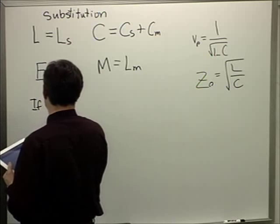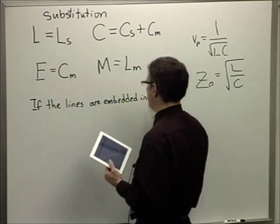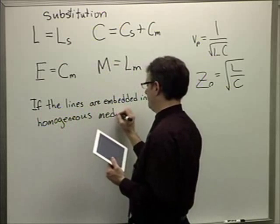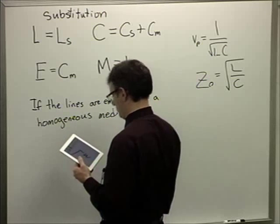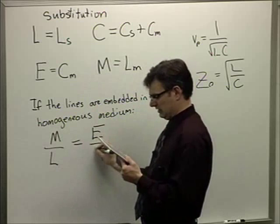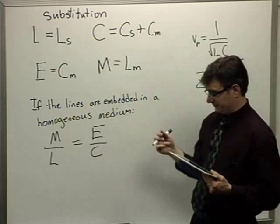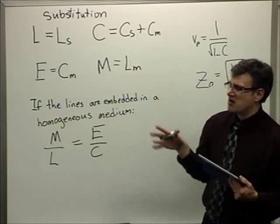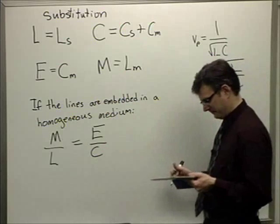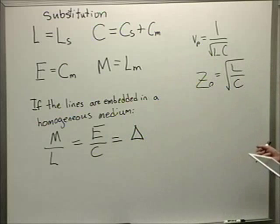Now, to get to the part where the crosstalk happens, I need to define another term here. If the lines are embedded in a homogeneous medium and they're identical in geometry, which we've already assumed, then it turns out the ratio of your mutual inductance to your individual inductance, M to L, and your ratio of E to C are similar. It should be identical in the limit of the homogeneous medium. That means the same dielectric stuff is around your lines. Notice, however, that the microstrip nominally violates that criterion because it's got dielectric material underneath the traces and air above. So this is only approximate for that. We're going to call that ratio delta.